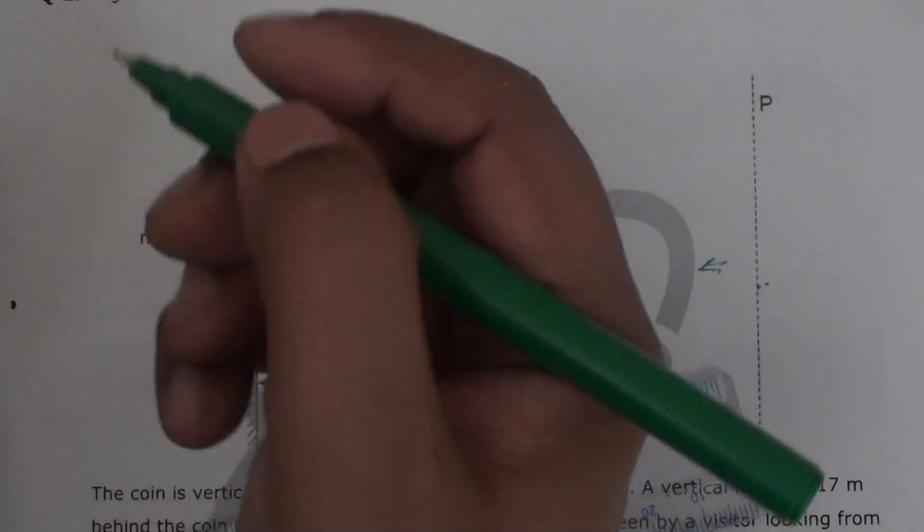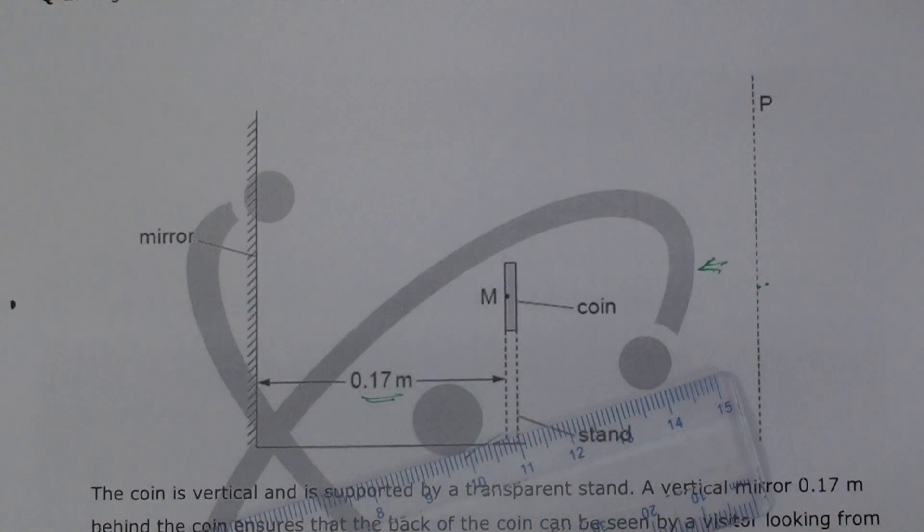This is the point where the image should be formed. Now is the time to draw what would happen in terms of light. Again, the same idea—light rays can go anywhere in any direction.